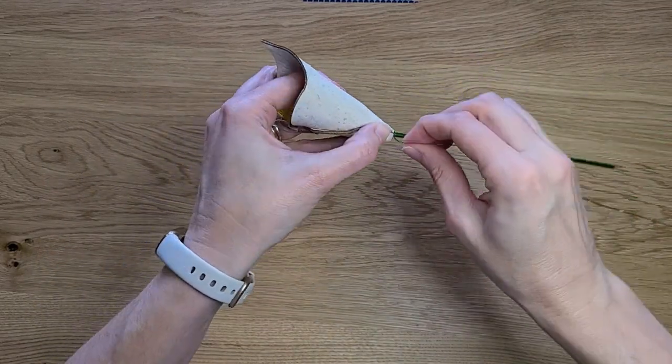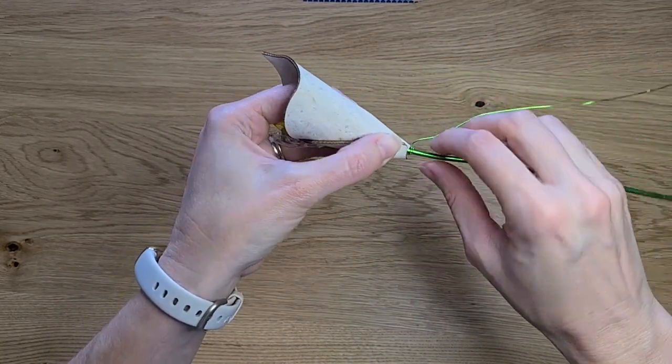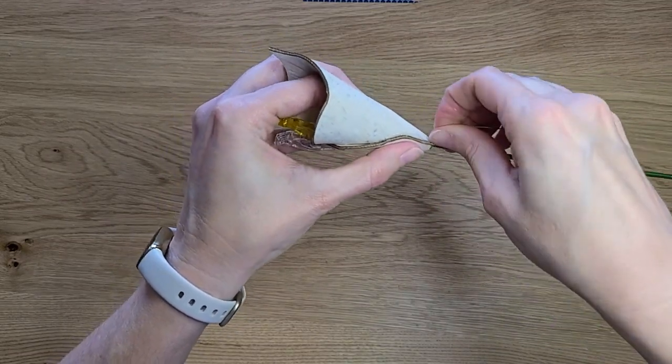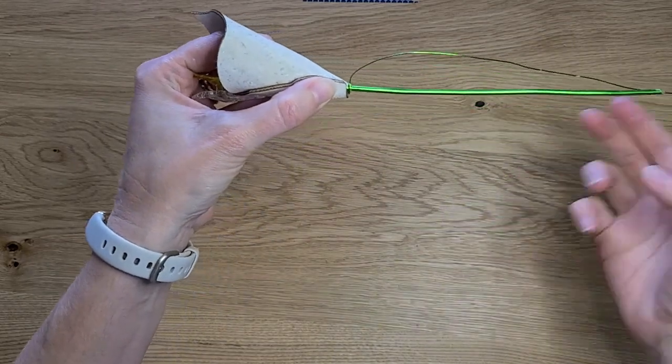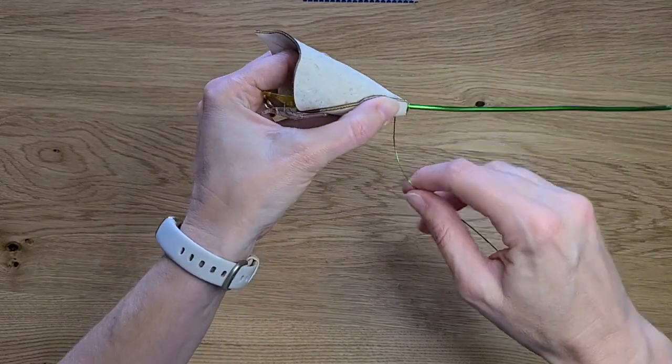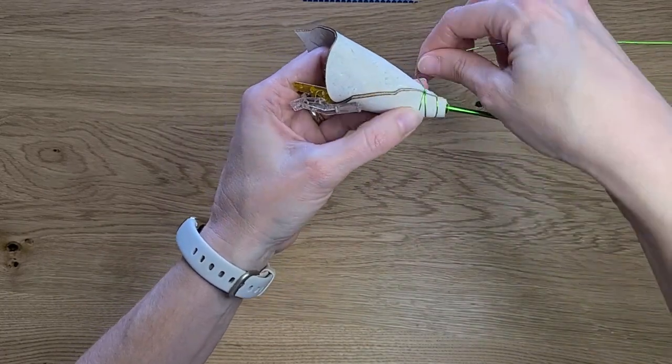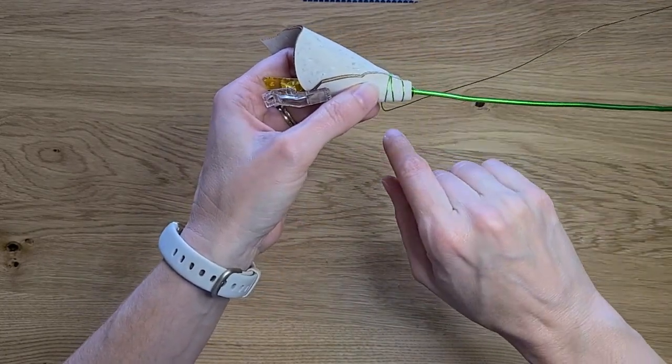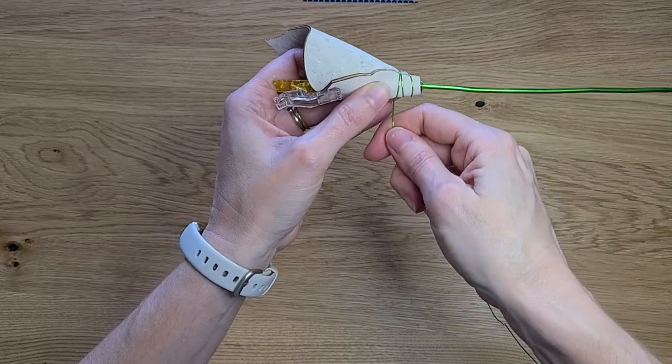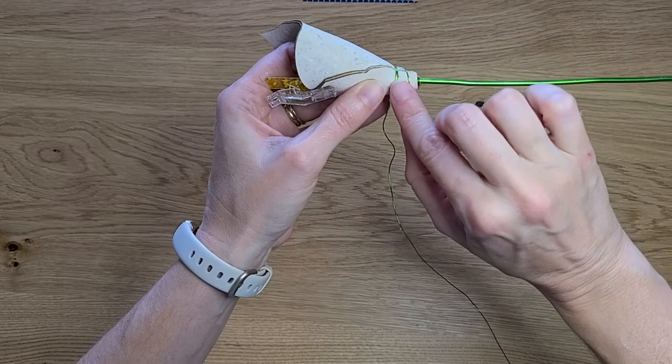Next thing you're going to want to do is wrap the green wire right at the base of where the flower and the stem meet. You want to wrap it just around the stem three or four times to get a nice hold. Then you're going to want to start wrapping it up the flower. Again, you don't want it tight touching at this point. Go up half an inch to three quarters of an inch, however you feel you want the flower to look. Give it a nice tug once you get to the top to get it taut and tight around that area.